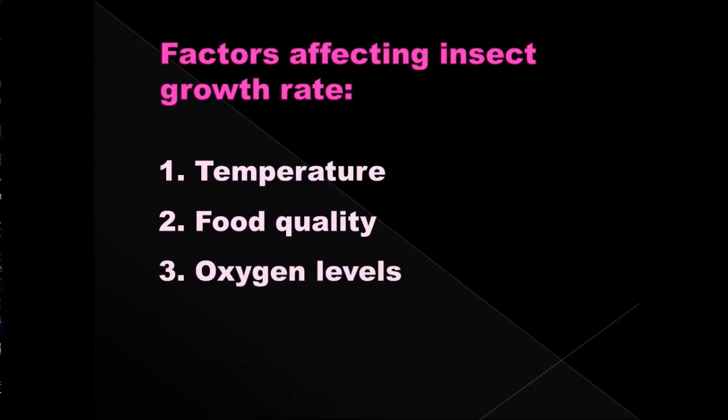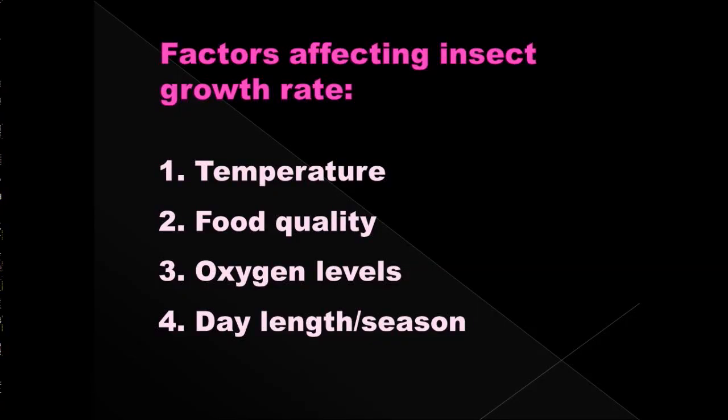Oxygen levels also matter — just like if you can't breathe, you can't grow. If an insect is trapped in a bag or enclosed space, it won't live very long. But if an insect has plenty of oxygen, it can grow quicker and will be more active on the body. Day length and season also play a role: shorter days in winter versus longer days in summer mean insects are more active during the summer months.